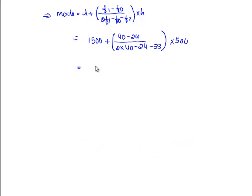Solving this, we get 1500. 40 minus 24 is 16 by 2 into 40 is 80 minus 24 plus 33 is 57, whole bracket into 500.